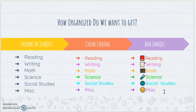My husband teaches fifth grade and looked at this and said, 'That's cute, but what's the point?' I explained that color coding and adding visuals, especially for younger learners, can be very helpful — and even older kids may benefit from icons helping them find folders quickly. If the class agrees that a globe icon always means social studies, then seeing that blue globe triggers their memory every time. It's really about helping them find their work more efficiently. You know your learners, so do whatever level of organization works for them.